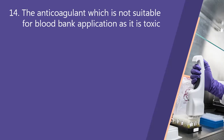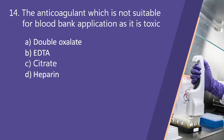Next question: the anticoagulant which is not suitable for blood bank application as it is toxic. Option A, double oxalate. Option B, EDTA. Option C, citrate. Option D, heparin. The right answer is double oxalate, which is a mixture of ammonium oxalate and potassium oxalate. Oxalates are not useful for peripheral blood smears as they do not preserve WBC morphology, and calcium oxalate precipitates in the blood making it harmful and toxic for blood bank use.